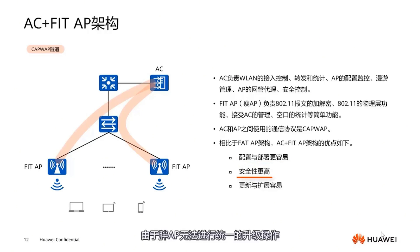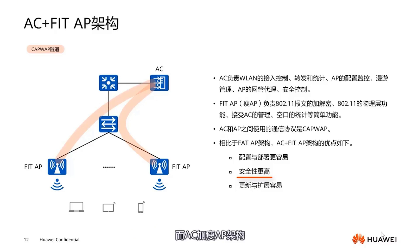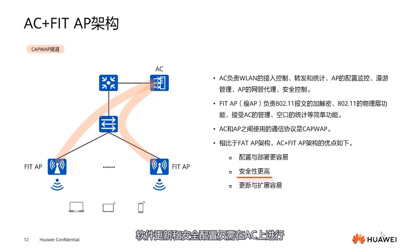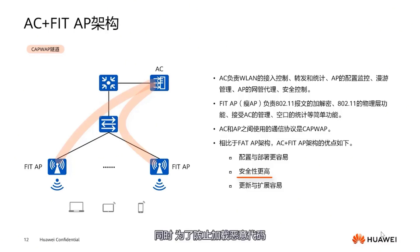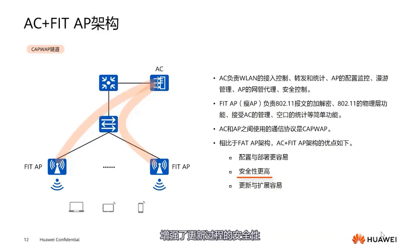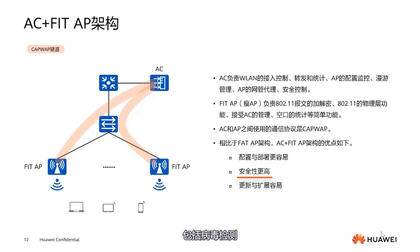Secondly, it offers higher security. Since FAT-APs cannot be uniformly upgraded, it's not guaranteed that all APs have the latest security patches. In AC-plus thin AP architecture, main security capabilities are on the AC. Software updates and security configurations need only be performed on the AC, allowing quick global security settings. To prevent loading of malicious code, devices authenticate software through digital signatures, enhancing the security of the update process. AC also supports security functions that FAT-AP architecture can't, including virus detection, uniform resource locator filtering, stateful inspection firewall, and other advanced security features.